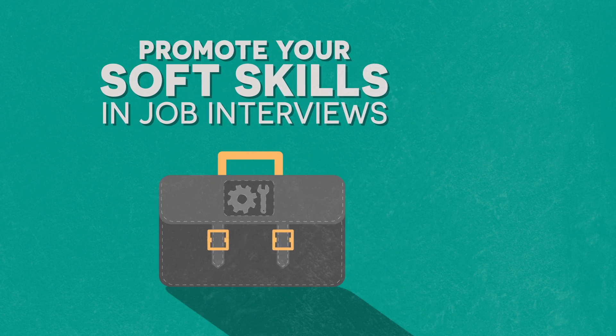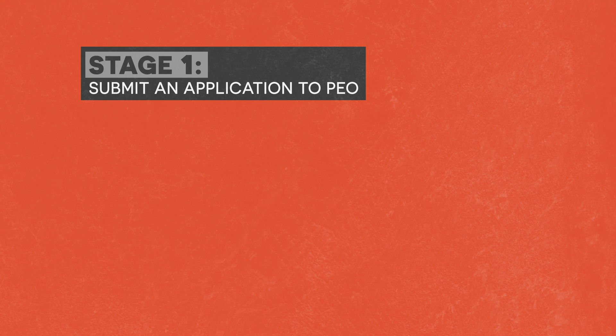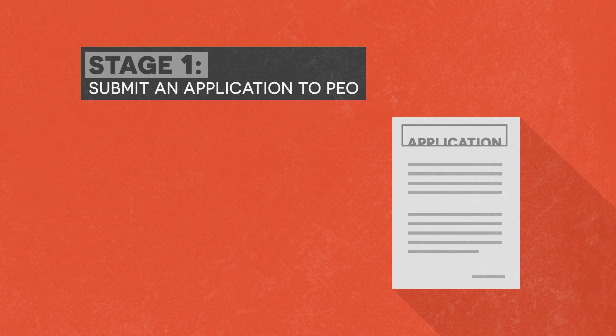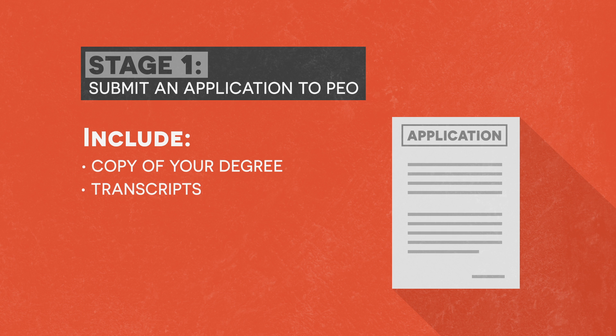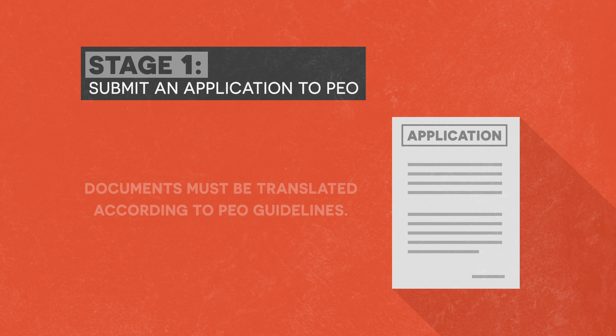To acquire the P.Eng designation you must go through several stages with PEO. First, you must submit an application to PEO. You have to include any academic documentation you have, such as a copy of your degree, transcripts, course descriptions, and other documents listed in PEO's application for licensure guide. If any of these documents are in another language, before submitting them to PEO you must have them translated according to the guidelines set out by PEO on their website.